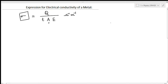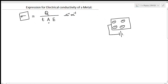To derive an expression, let us consider a metal bar consisting of n number of free electrons. When it is subjected to an external electrical field, these free electrons are accelerated. They move with a velocity called drift velocity, undergoing drift motion in a direction opposite to the applied field direction.